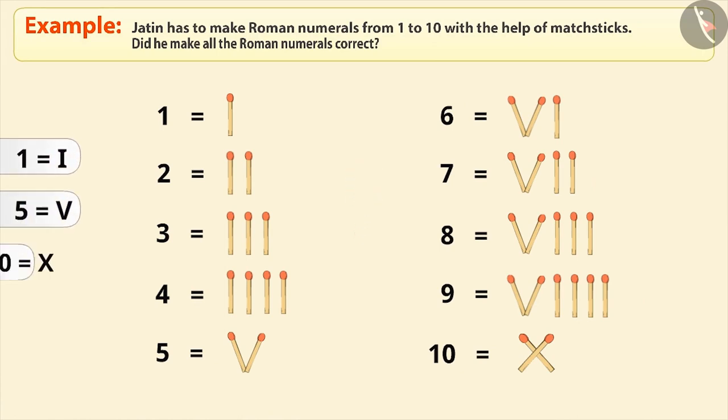We have learnt to write the symbols of 1, 5 and 10. 2 is written by repeating the symbol of 1 two times and 3 is written by repeating the symbol of 1 three times. Has he expressed 4 correctly?